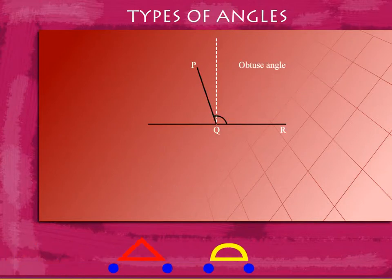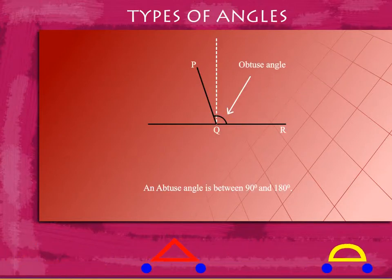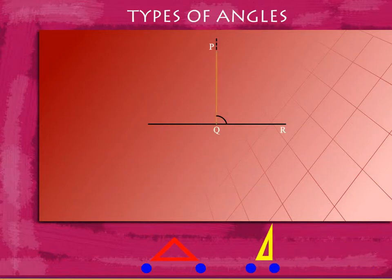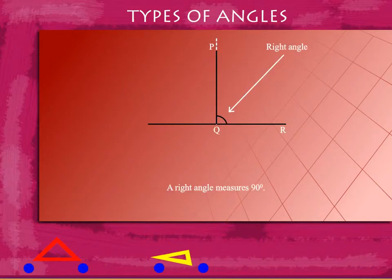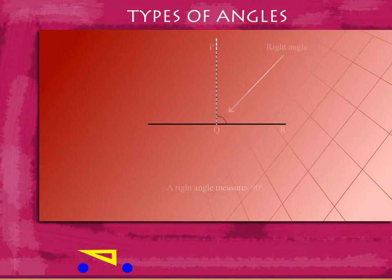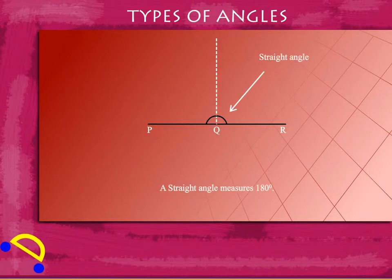Obtuse angles are angles measuring between 90 degrees and 180 degrees. Right angles are angles measuring exactly 90 degrees. Straight angles are angles measuring exactly 180 degrees.